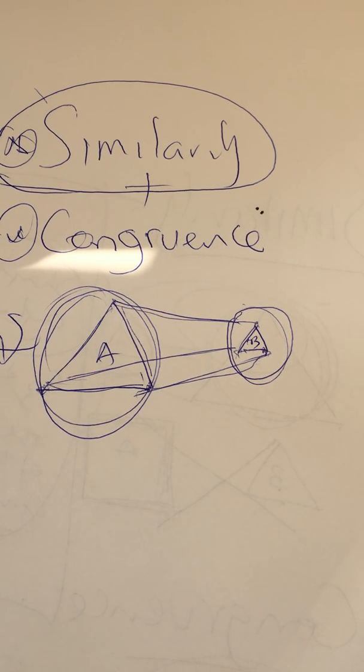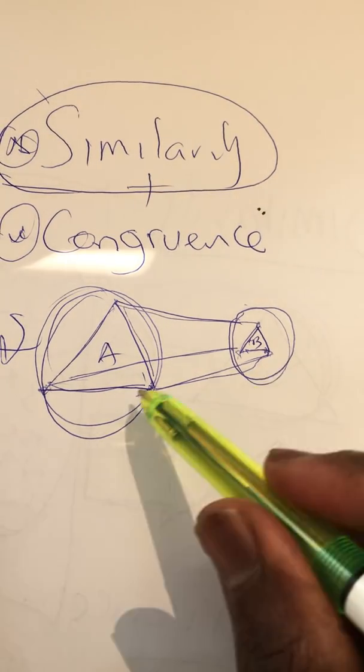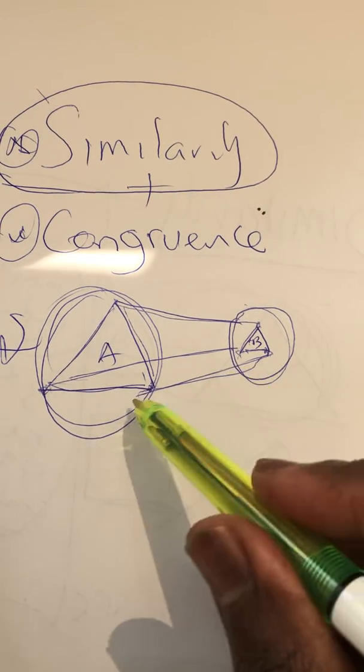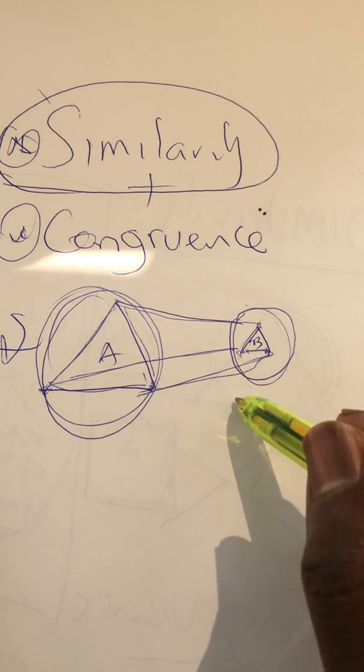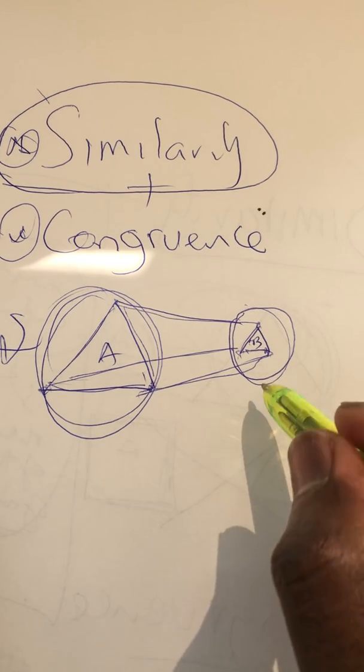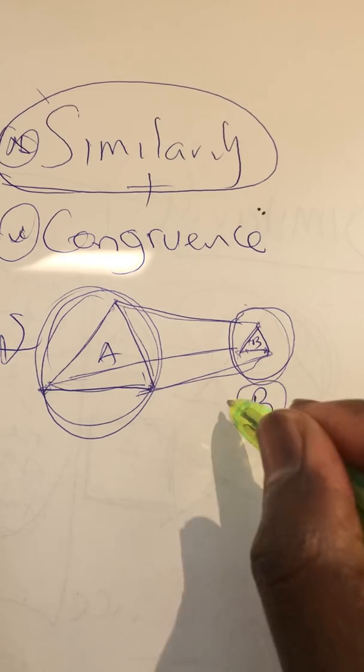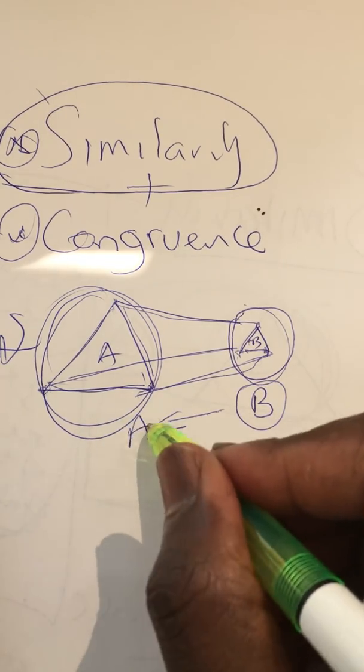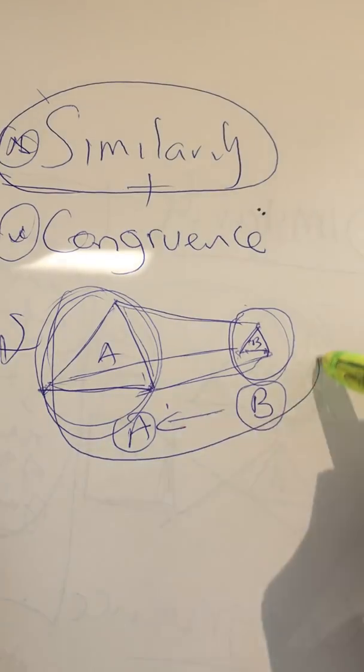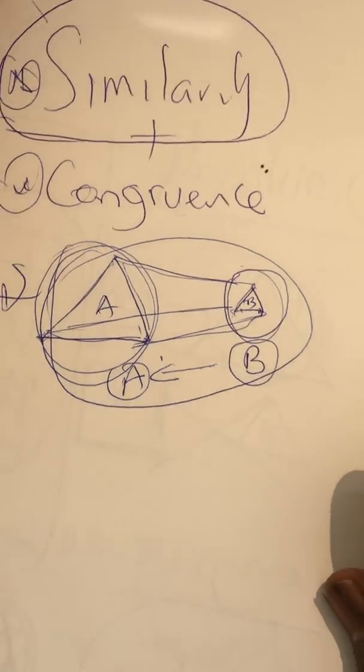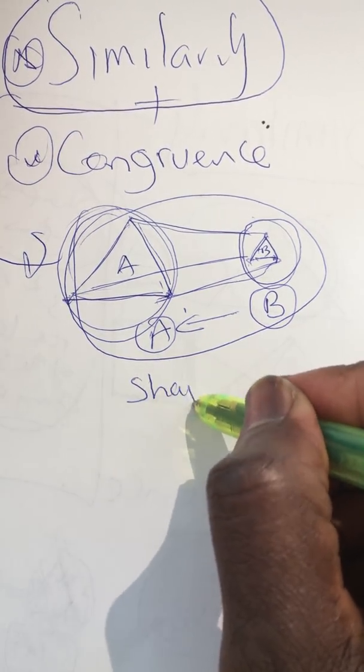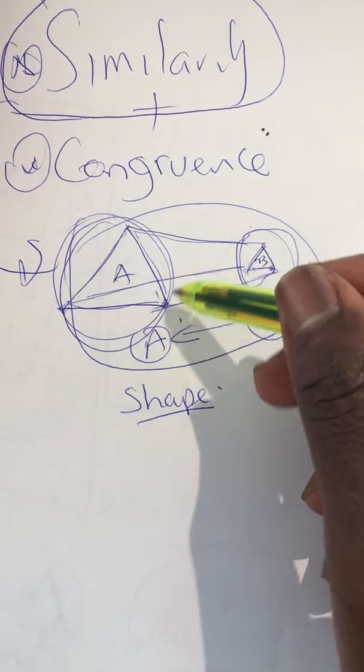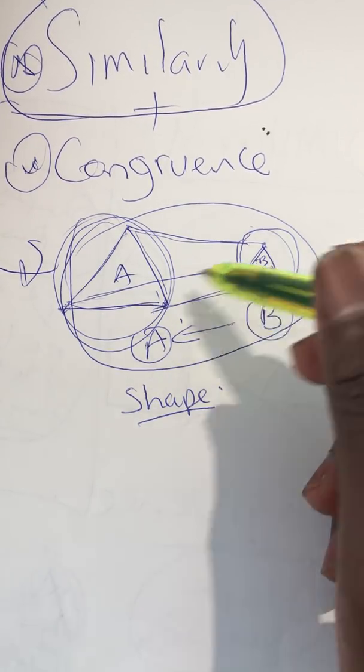And that, my friend, is what similarity is all about. Similarity is the study of the relationship between two objects to see whether one object is a rescaled version of the other. So clearly from this drawing, we know that triangle B is a rescaled version of triangle A, so they are similar. Similarity mainly deals with the study of the shape.